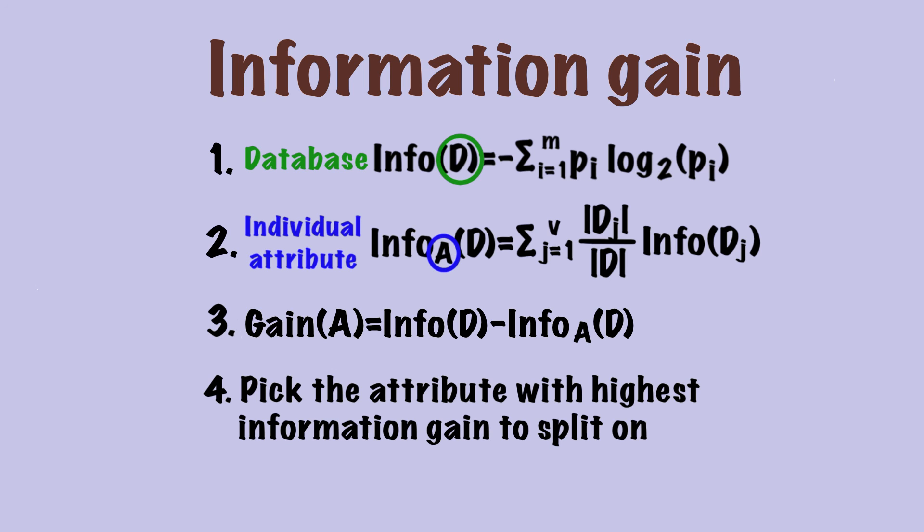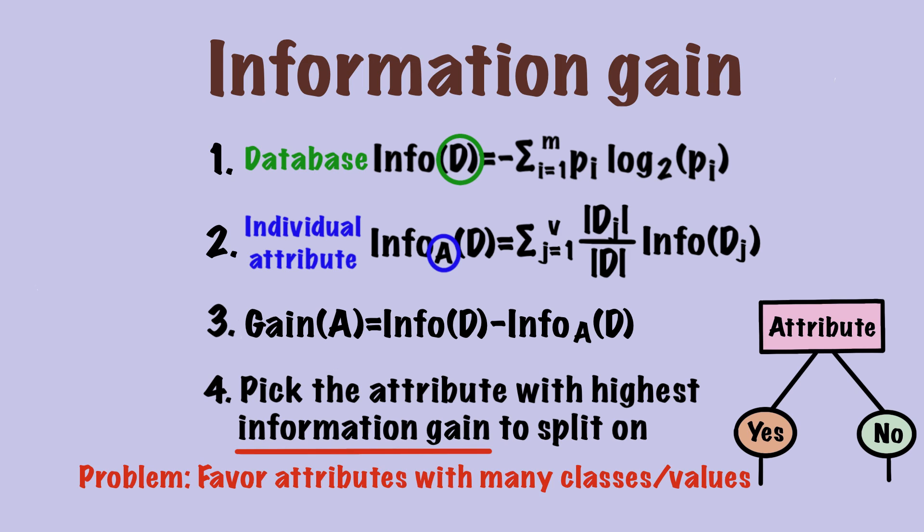Last, we repeat the process for each attribute in the database, and we select the one with highest information gain to split on. After all, the goal of information gain is to help us prioritize the attribute to split on. One thing to note is that information gain favors attributes with many classes. This problem can be serious when some attributes have more classes than the other. So you should pay extra attention to this issue when using information gain.